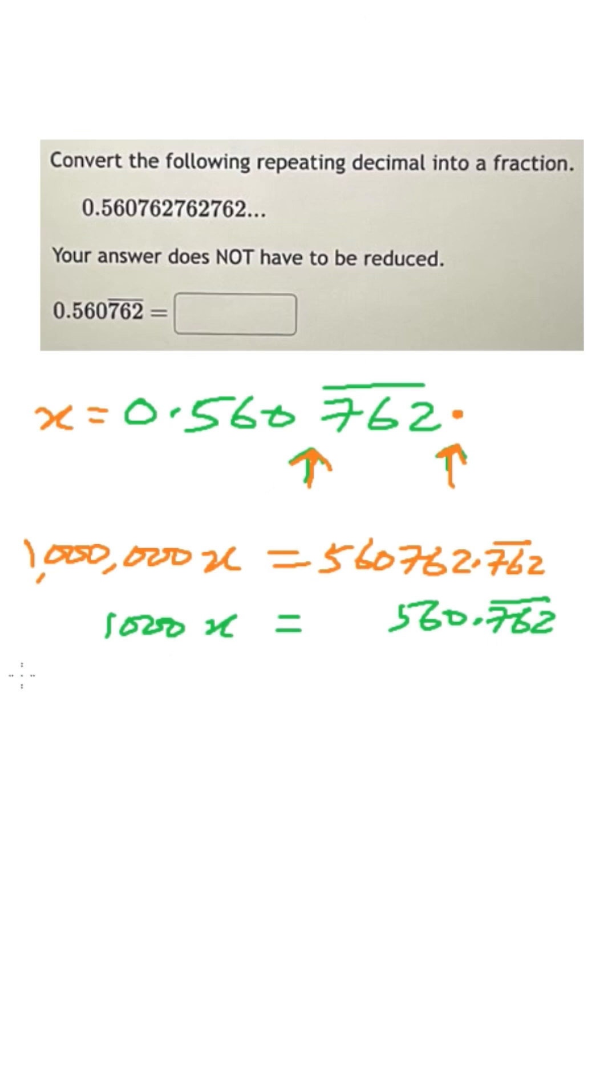Now what we do is we subtract the 1000x from 1 million x. It will become 999,000x is equal to 560.762 minus 560.